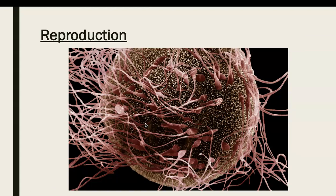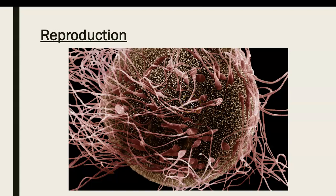Another important function of humans is reproduction. This micrograph shows a single egg — the ovum — with many sperm that have swum to it, sticking to it and trying to incorporate their DNA into the egg. It's an extraordinary picture that also shows the dramatic difference in size between an egg and sperm.